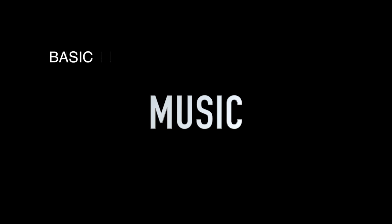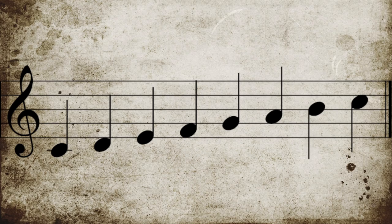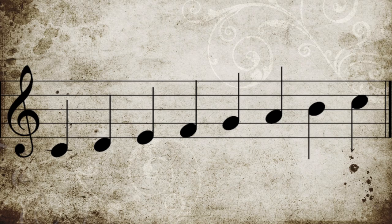But first let's talk about music in general, just some basic musical elements. Music consists of scales and chords. Scales are basically pitches organized into a pattern, as an example of a basic C major scale.